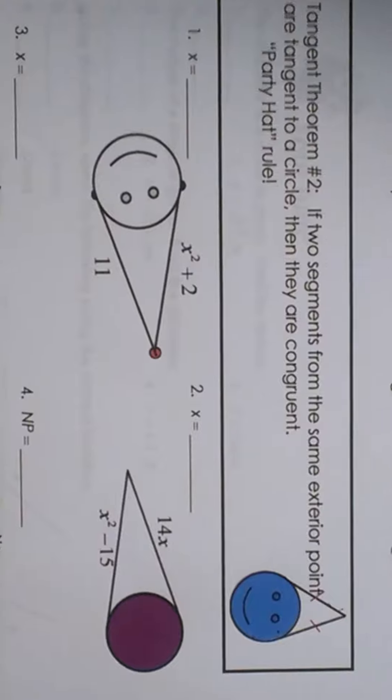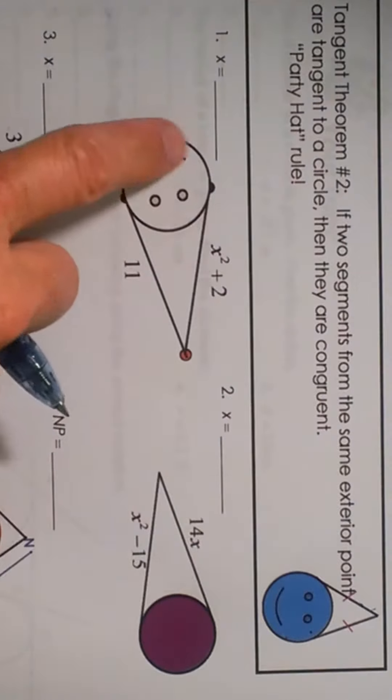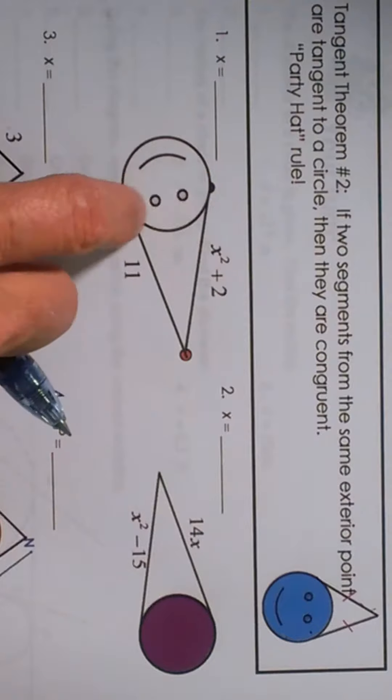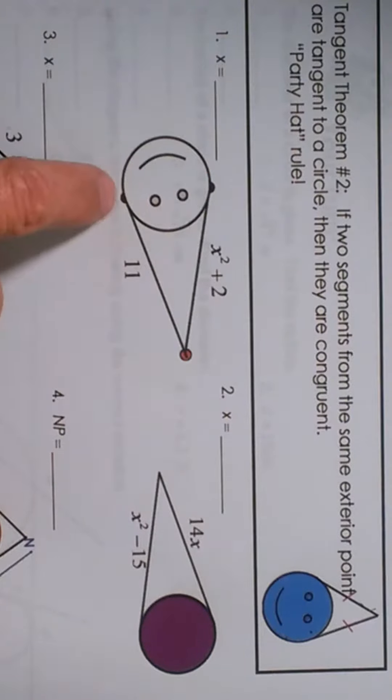So now we're just going to take that and apply it with some algebra. Here we go. We've got the Party Hat Rule going on. We've got our circle, which I like to draw my smiley face in, and draw my Party Hat so you can see the two segments are congruent.